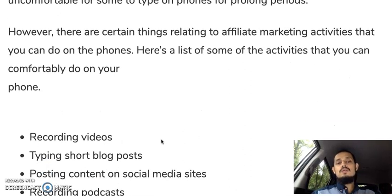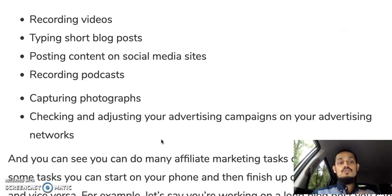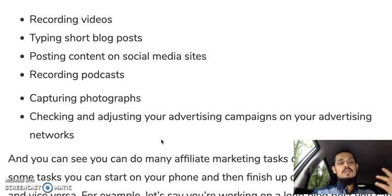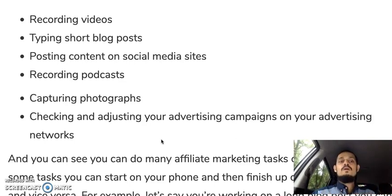There are certain affiliate marketing activities you can comfortably do on your phone. Recording videos is one — you can easily record videos using your smartphone, as these days video recording capabilities are very high quality, HD quality, and some phones even have 4K quality with pretty good sound as well.